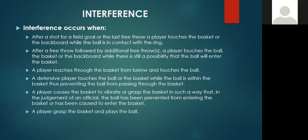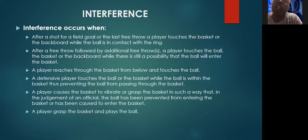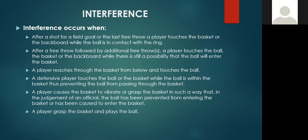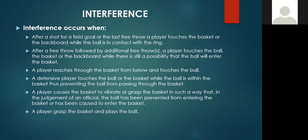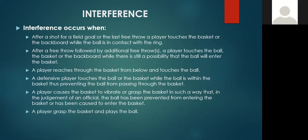A question from the group: a defensive player touches the ball on the basket while the ball is within the basket, preventing the ball from passing through — if an offensive player commits the same action, is it not an interference? Correct — the offensive player while the ball is within the basket touches the ball: no interference. The defensive player does it: it's a violation, the goal shall count.